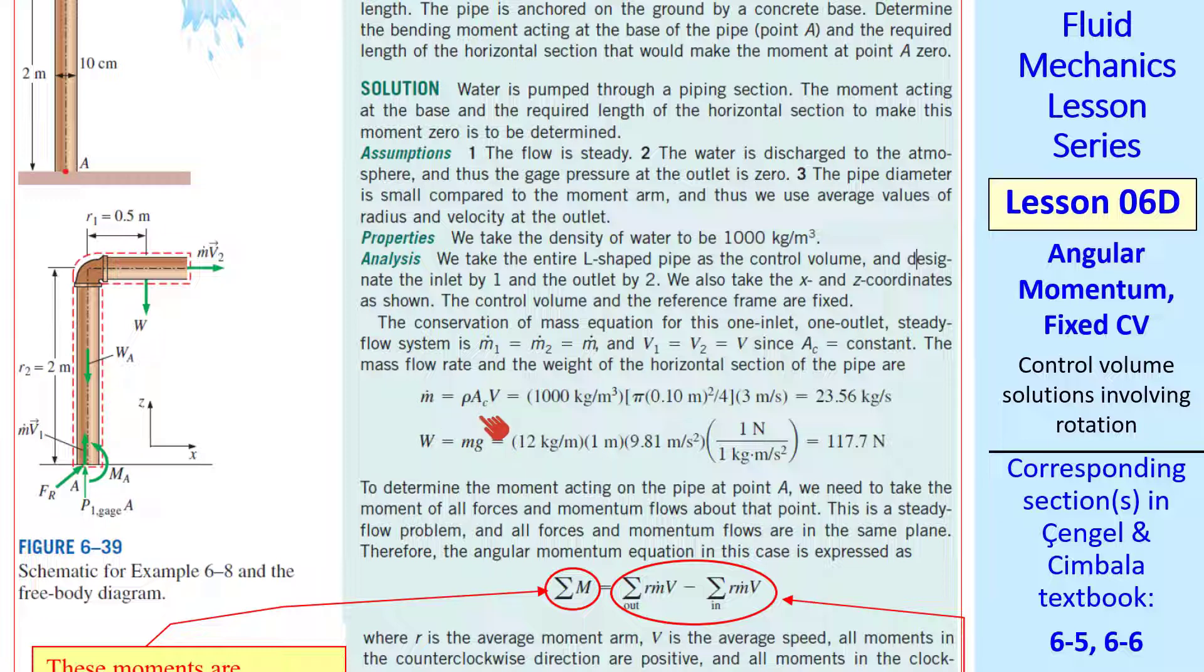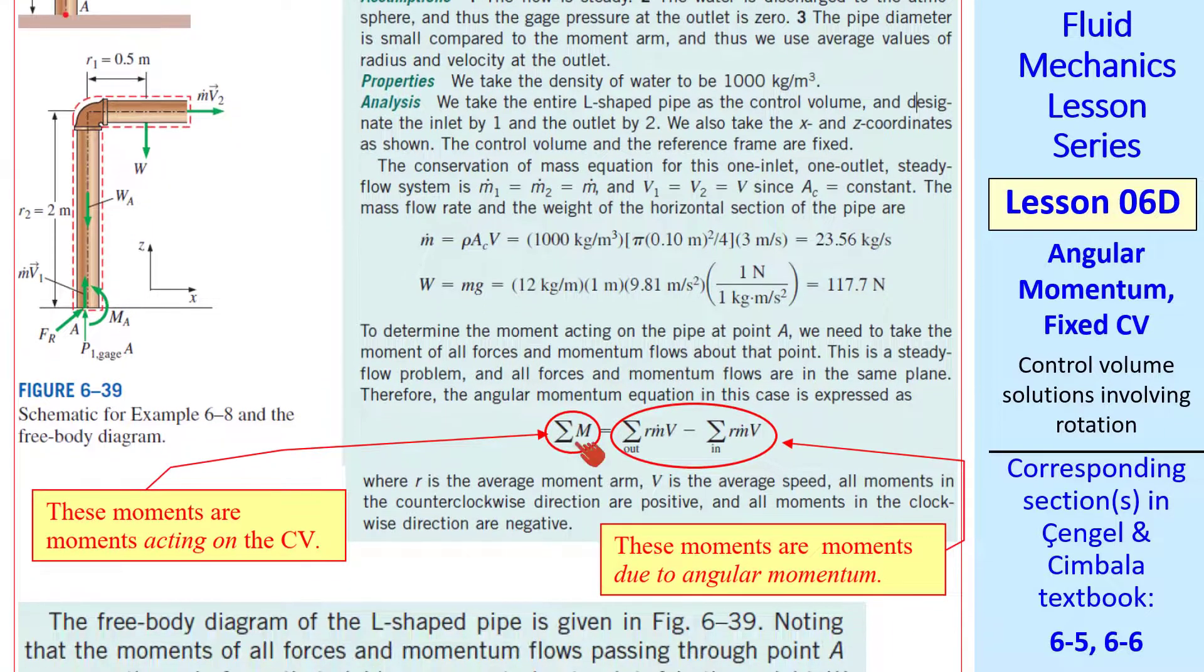We calculate the mass flow rate, rho cross-sectional area times V. We get our result in kilograms per second. We were given the weight of the water and the pipe per meter. So we calculate this total weight, which acts at a distance of R1 from the center line of the vertical pipe. If this pipe were longer, W would act further to the right. Here's our result in newtons. We use our workhorse equation to find MA.